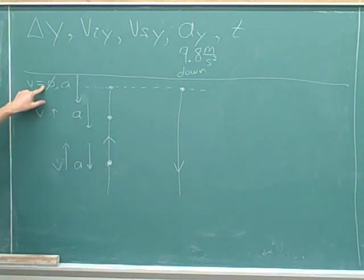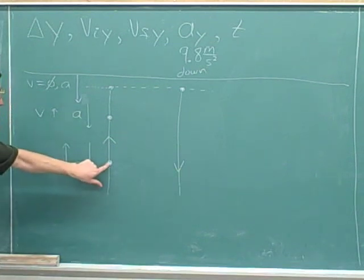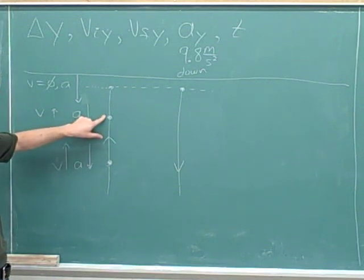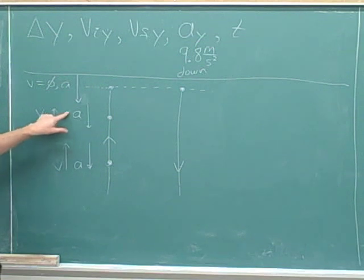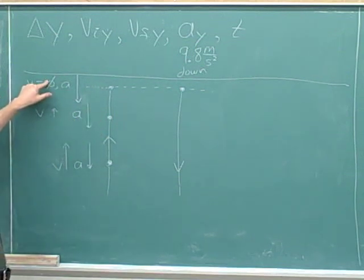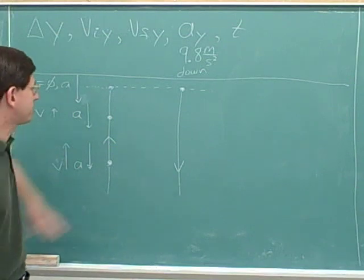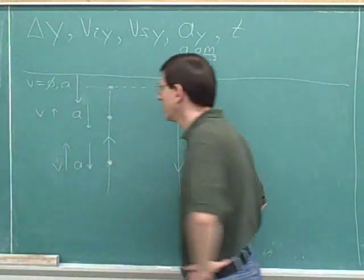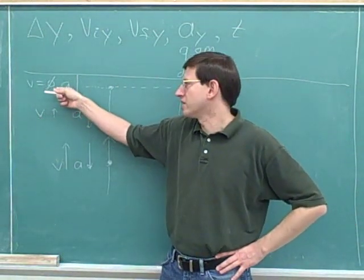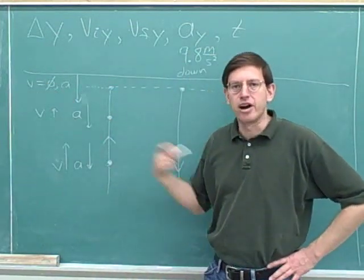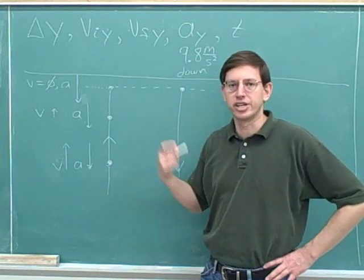Once we've slowed down so much that the velocity is zero, clearly the object can't keep moving up anymore. Down here we saw that we were moving upwards quite quickly, but gravity was slowing us down so that at this point we were moving upwards but pretty slowly. Eventually we're going to slow down so much that we're not moving upwards at all, so for an instant our velocity is going to be zero — and that's going to be the peak of our trajectory. This is a very important problem-solving idea: at the peak, the vertical velocity is zero because we're changing direction.